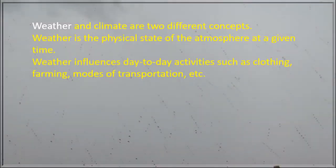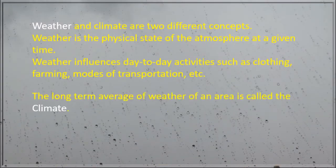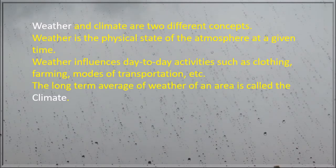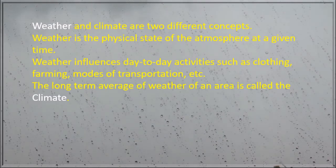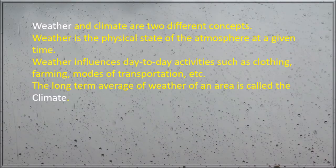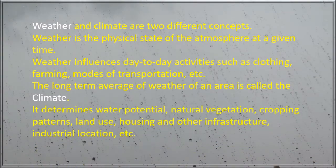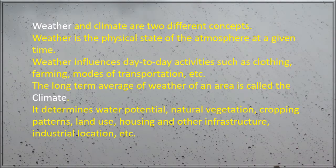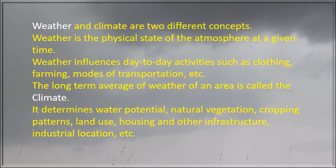The long-term average of weather of an area is called the climate. It determines water potential, natural vegetation, cropping patterns, land use, housing and other infrastructure, industrial location, etc.